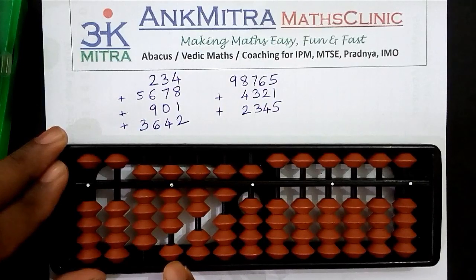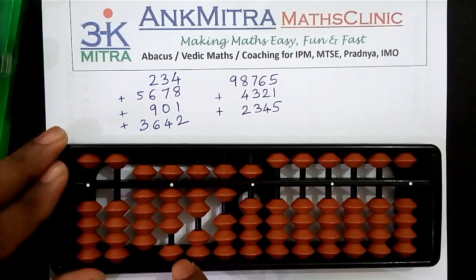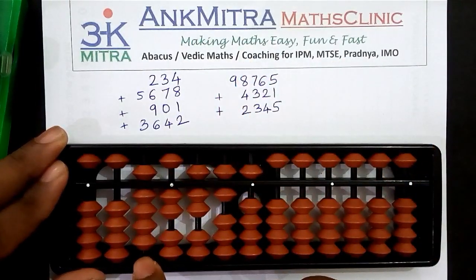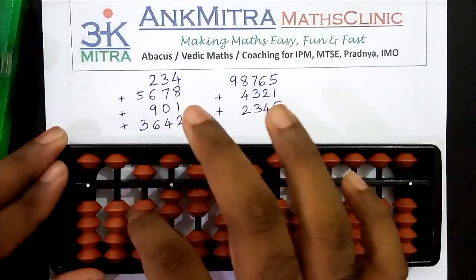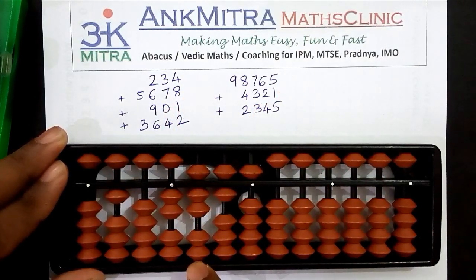The next number to be added is four thousand three hundred and twenty-one, starting on the thousands place. For addition of four on the thousands place, I don't have four beads available and I also don't have five for addition, so I'll use the big friend of four — big friend of four is six — subtracting six and adding ten on the next left rod. Addition of ten on the next left rod is also not possible directly, so I'll use the big friend for one: minus nine plus ten. The addition of four on the thousands place is now complete.